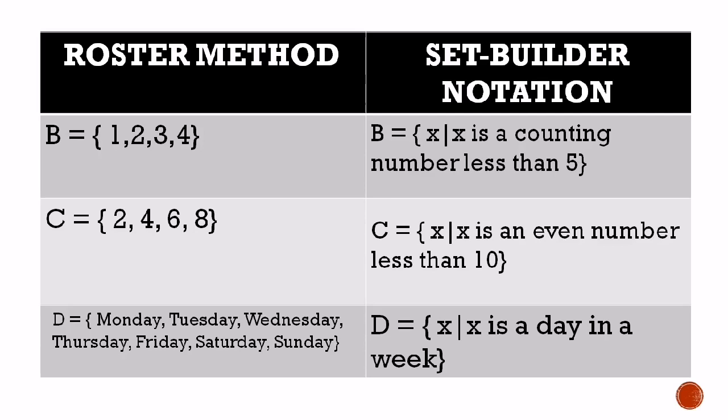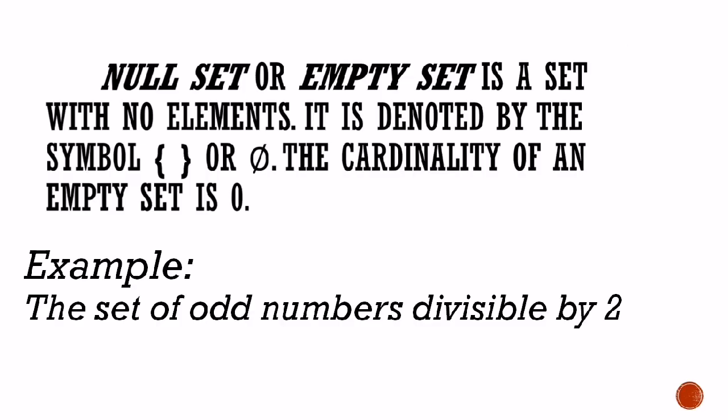That is how we represent given sets — either in roster method or set builder notation. Null set or empty set: the symbol is a circle with a slash (∅) or empty braces {}. A null set or empty set is a set with no elements. The cardinality of an empty set is 0. Example: the set of odd numbers divisible by 2 — this is an empty set because there are no odd numbers divisible by 2, so there is no element contained in this set.